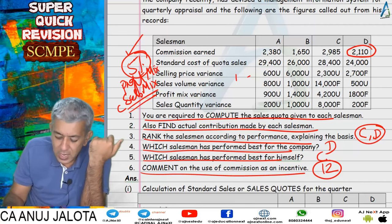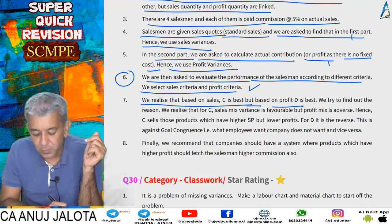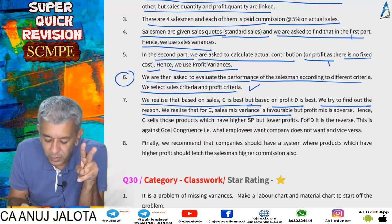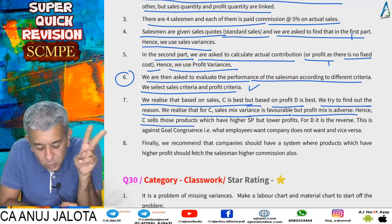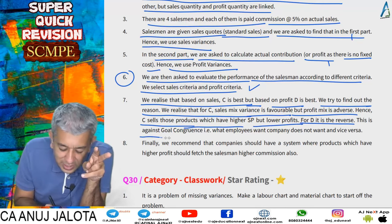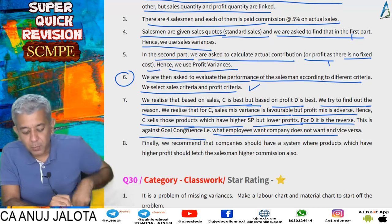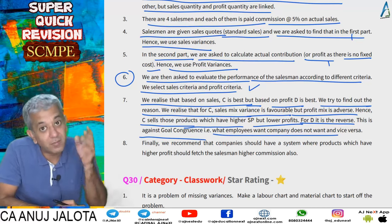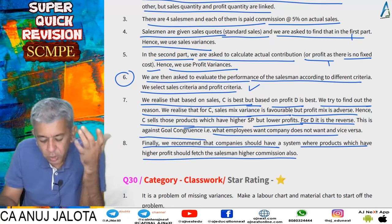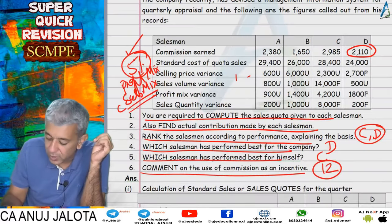In summary for question 29: based on sales, C is the best; based on profit, D is the best. The reason is that C's sales mix variance is favorable but profit mix variance is adverse — C sells products with higher selling price but lower profit. For D it is the reverse. This is against goal congruence. Recommendation: adjust commission rates so that products with highest profit also fetch salesmen the highest commission.